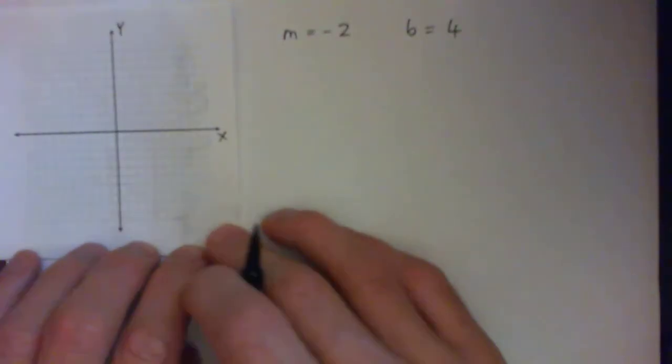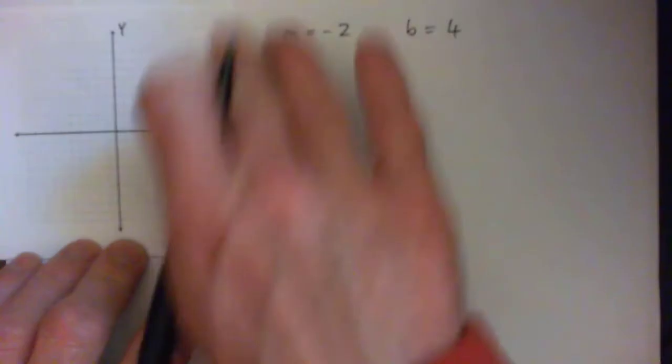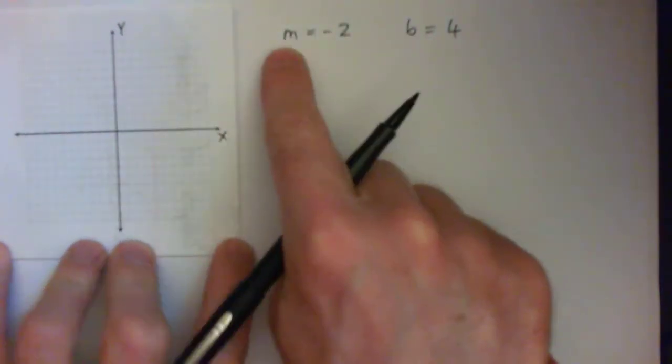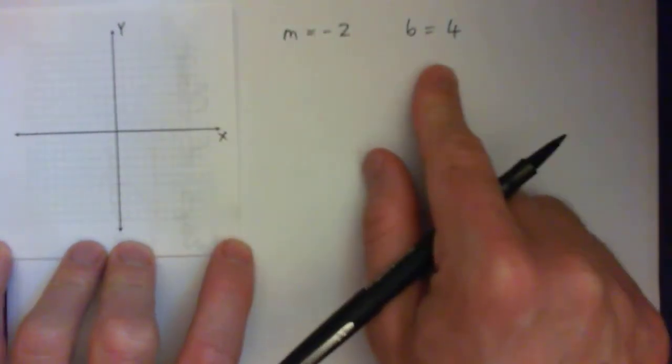Alright, so good deal. So this one they're giving us m is negative 2 and b is 4. So the slope is negative 2, the y-intercept is 4.